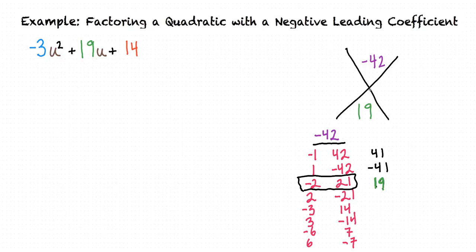Now that we've found these two numbers, we can add them into our X here just to stay organized. And we're ready to replace this 19u with -2u + 21u, like this.